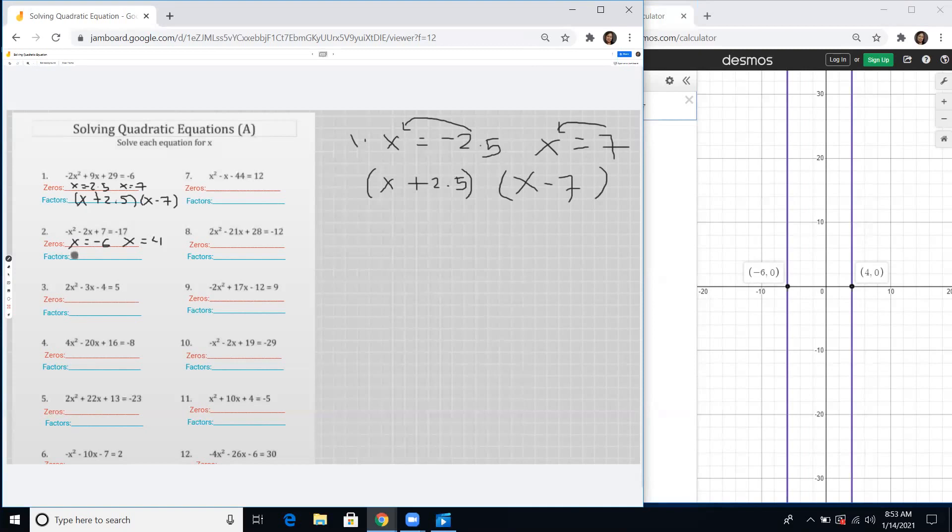For the factors, we'll write x. Moving the negative 6, it will become positive 6. Take note of the difference between zeros and factors, I will always tell you this. And then moving 4 on the other side, we have x minus 4.